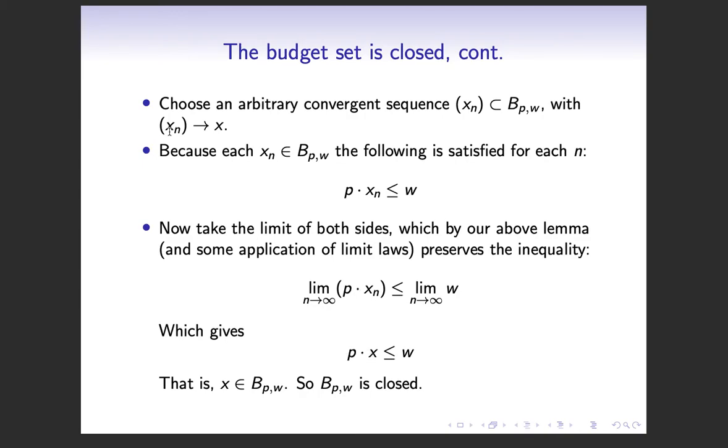So that means that we have that for any arbitrary convergent sequence, that the limit is going to be in our budget set. Because when we pass the limit through, we get this, which means that our limit X is in the budget set. So any sequence that we take converges to a limit that's also in the set. So the set is closed.